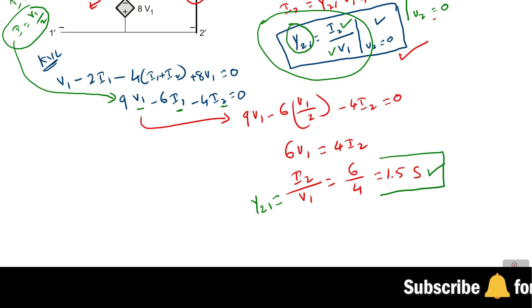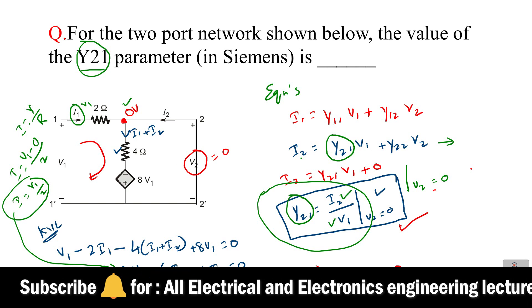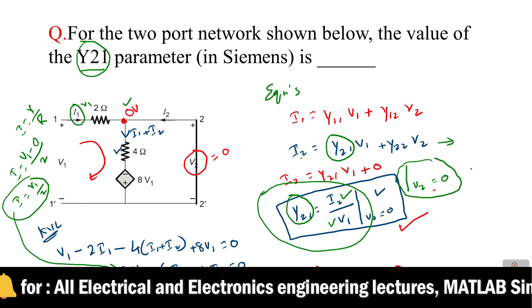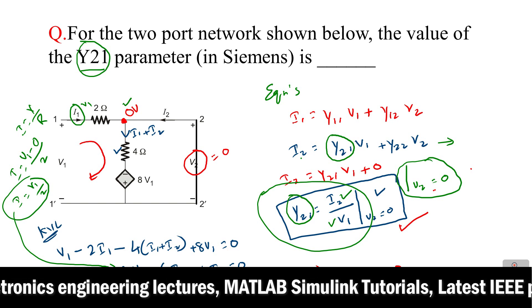In the same way you can find out any Y parameter like Y11, Y12, anything by short-circuiting the voltages. That's why this Y parameter is also known as short-circuit admittance parameters because we are finding the parameters by short-circuiting.